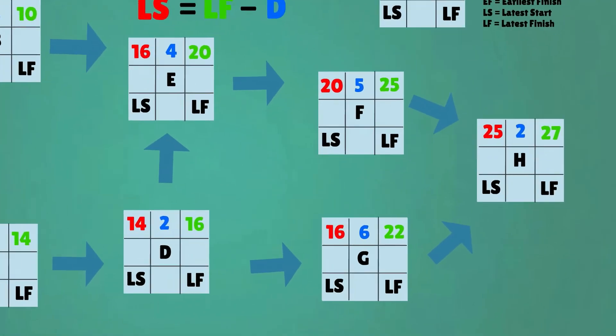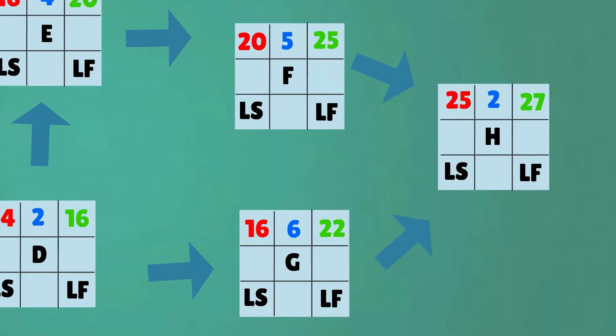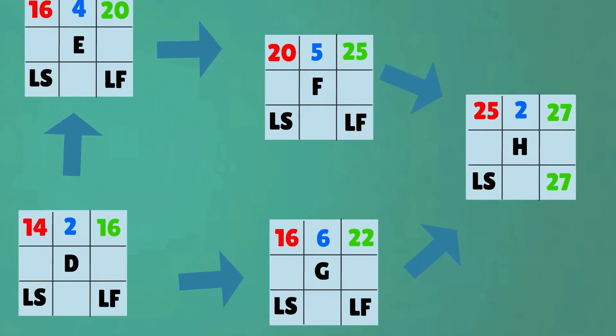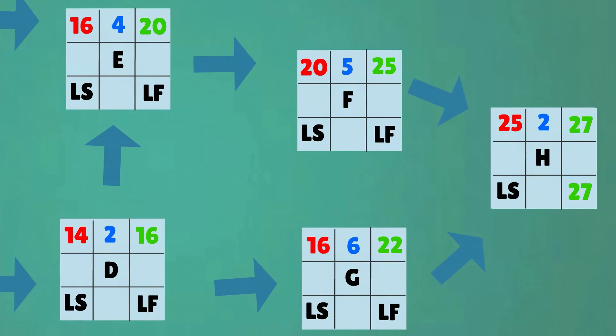As the project as a whole should not be delayed, the late finish of the last activity, activity H, should be similar to the early finish, in our case week 27. From there on, the last line of the cubicles can be filled out backwards.